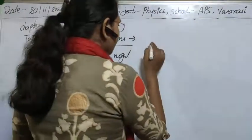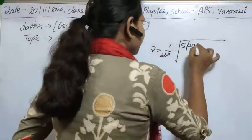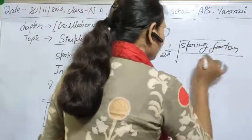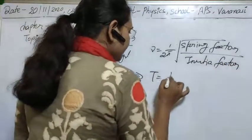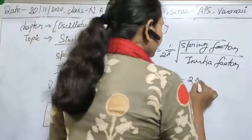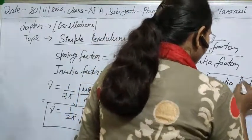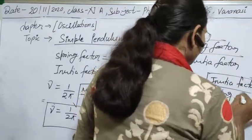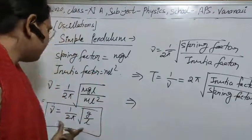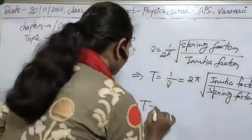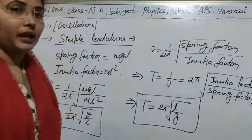Since nu equals (1/2π) times the square root of the spring factor over the inertia factor, and time period T is the reciprocal of frequency, we get T equals 2π times the square root of the inertia factor over the spring factor. Substituting ml² and mgl gives T equals 2π√(l/g). This is the time period of a simple pendulum.